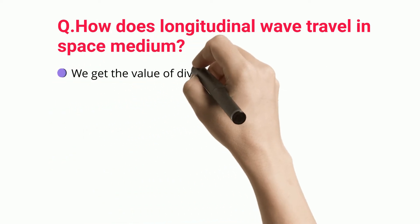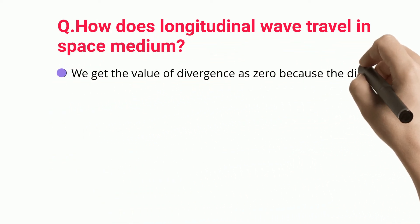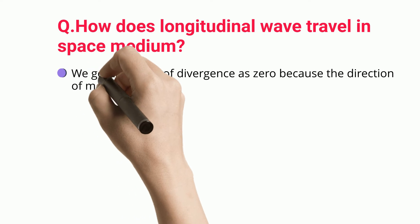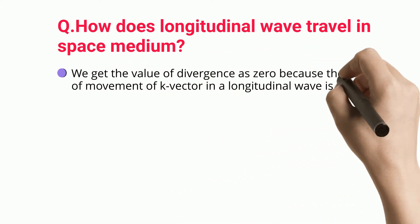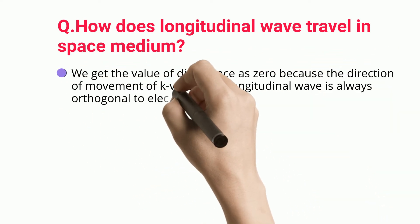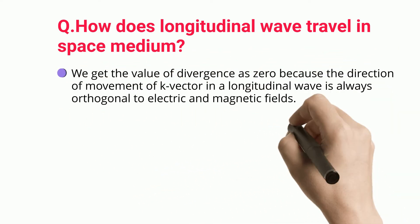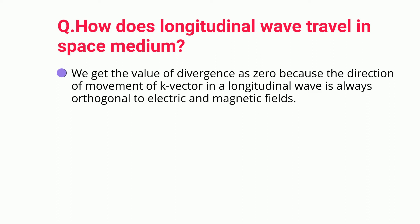We get the value of divergence as zero because the direction of movement of the k vector in a longitudinal wave is always orthogonal to the electric and magnetic fields.